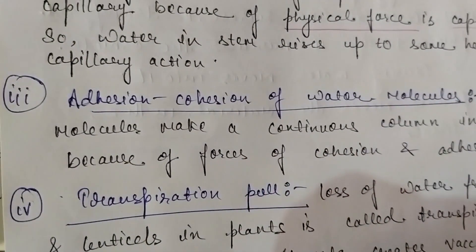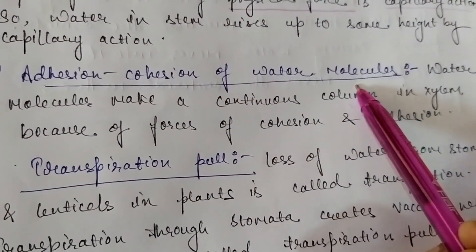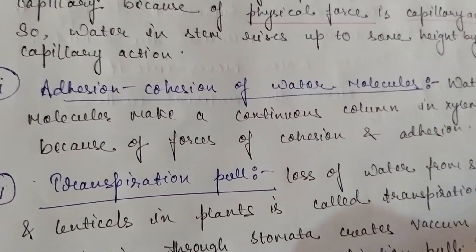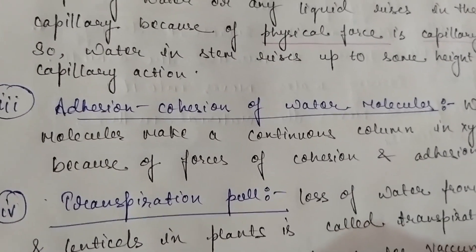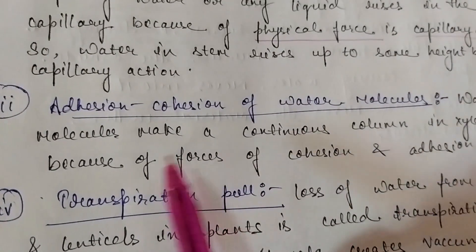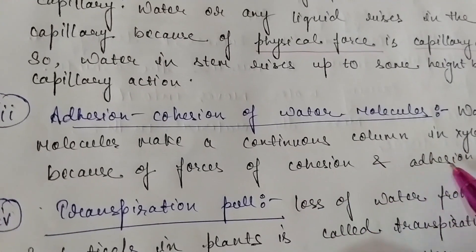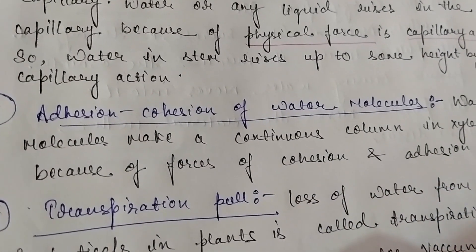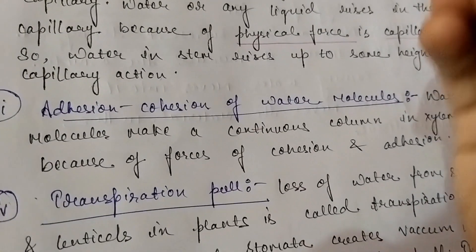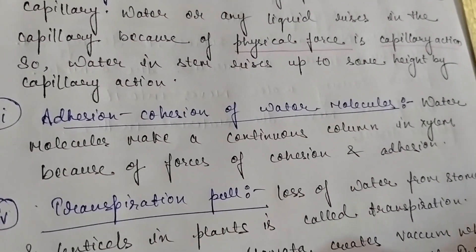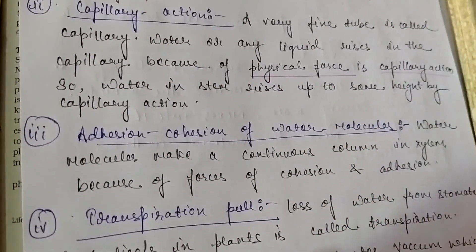Then there is adhesion and cohesion of water molecules — these are all conditions of ascent of sap. Adhesion and cohesion means that water molecules and mineral molecules all cling together — this is adhesion and cohesion. The water molecules form a kind of continuous column in xylem because of forces of cohesion and adhesion — which means clinging of like and unlike molecules. So when the full continuous tube of xylem is formed, the force of adhesion and cohesion acts within it.